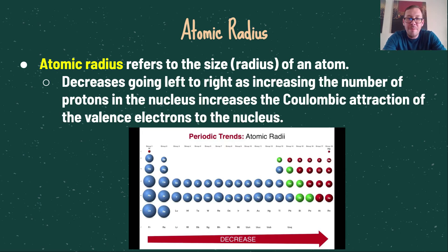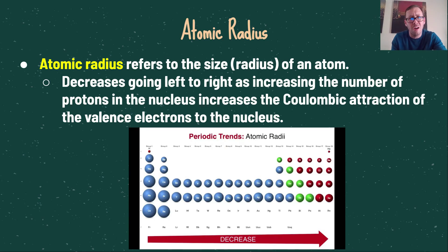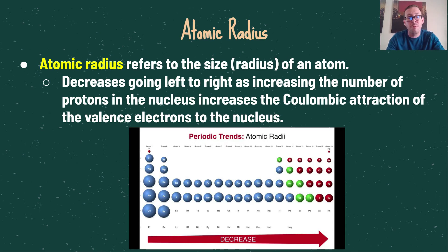If we look at atomic radius going from left to right on the periodic table, the atomic radius actually decreases. This is due to the increasing number of protons in the nucleus as we go left to right, which increases the Coulombic attraction of the valence electrons to the nucleus. That increased positive charge attracts those valence electrons more and more as we go from left to right, and therefore the atomic radius decreases. You can think of atomic radius as inversely related to ionization energy.